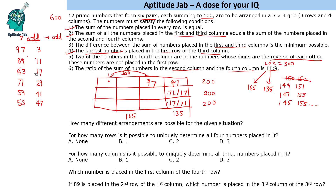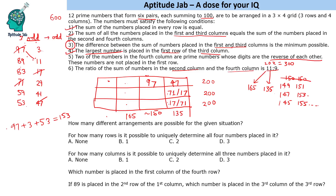Now we have identified 97, 47, 17, and 71. The second column must sum to 165. For the third condition, we try to make the column-1 and column-3 sums as close to 150 as possible. Taking 97 + 11 + 41 = 149 is achievable, which is the closest possible. So the first column sums to 149 and the third column sums to 151, with 11 and 41 placed in the first column.